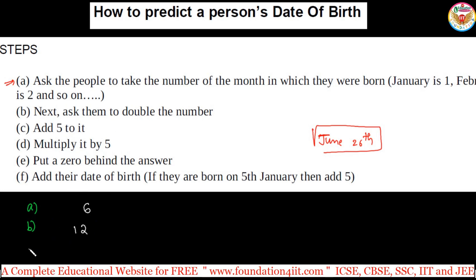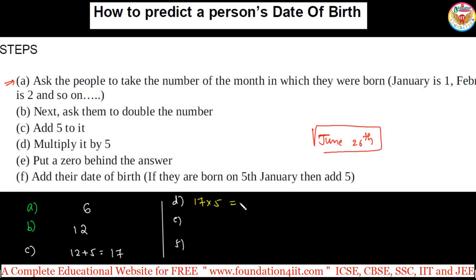Then add 5 to it. So 12 plus 5 gives 17 in his mind so far. Then multiply it by 5. So 17 multiplied by 5 equals 85. Next, put a 0 behind the answer — so 85 becomes 850. Then add their date of birth. According to this example, the date is 26, so 850 plus 26 gives a total of 876.